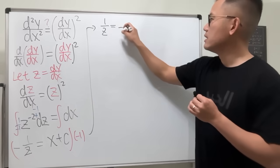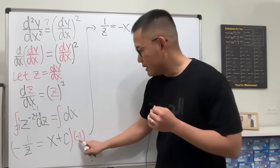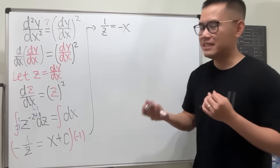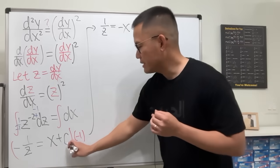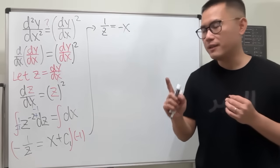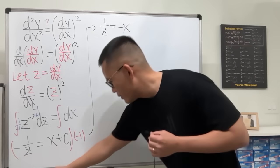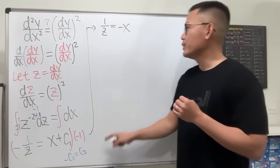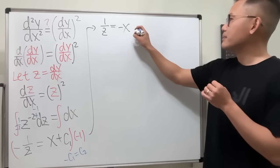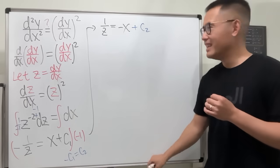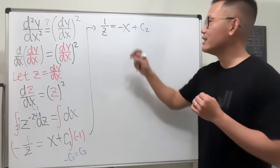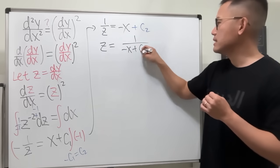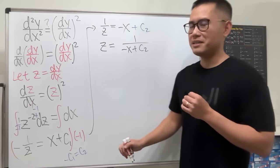Since negative c is also a constant, we rename it c₂. So we have 1/z = negative x + c₂. Taking the reciprocal of both sides gives z = 1/(negative x + c₂). And since z = dy/dx, we now have another differential equation to solve.